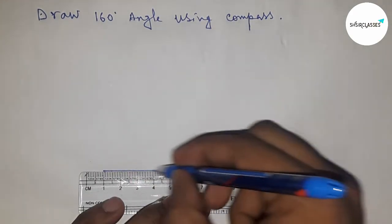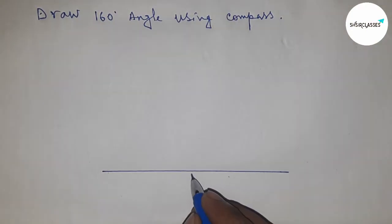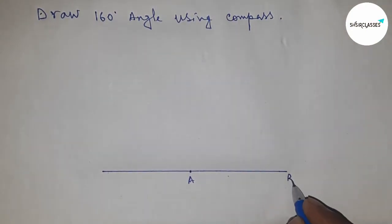First of all, draw a line of any length. This is point A and this is point B.